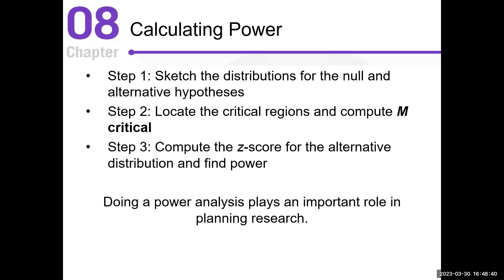The second step is you locate the critical regions and compute M critical. The third step is compute the z-score for the alternative distribution and find power. The power is the proportion you'll find in the z-table used to find the portions of the normal distribution.